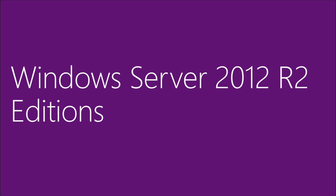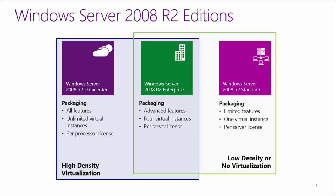Let's review the editions of Windows Server. For those familiar with the prior editions of Windows Server 2008 R2, you will recognize Data Center, Enterprise, and Standard Edition. This licensing model provided flexibility by offering a variety of editions and features. Data Center offered a per-processor licensing model with all available features and unlimited virtualization, while Enterprise Edition was available as a server license that permitted up to four virtual instances and offered some advanced features. Standard Edition was available as a server license, had limited features, and provided for one virtual instance.